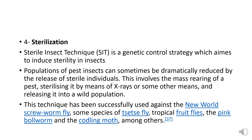Sterilization — making males sterile. The Sterile Insect Technique (SIT) is a genetic control strategy which aims to induce sterility in insects. Populations of pest insects can sometimes be dramatically reduced by the release of sterile individuals.